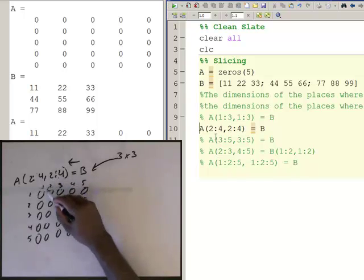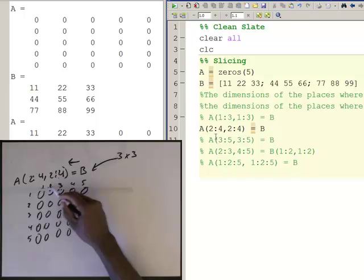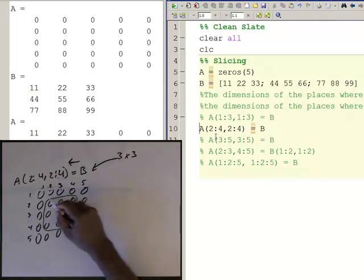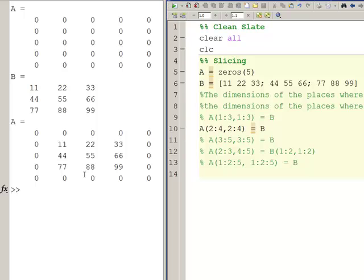So we're these rows intersecting with these columns two, three, and four, so that's this area in here we're targeting. Once again this is still a three by three, so B should fit nicely. And when I do this you notice now B is stuck in the middle of A in these element locations here.